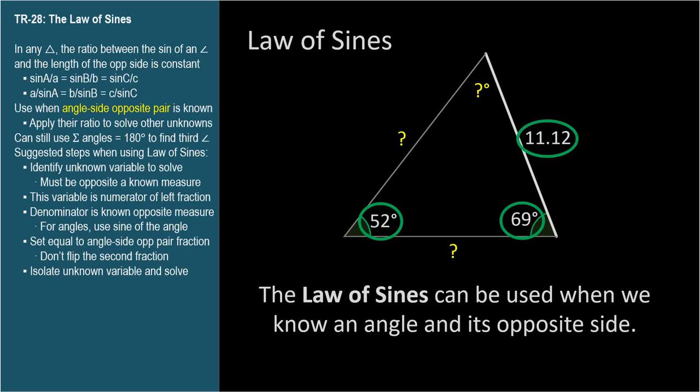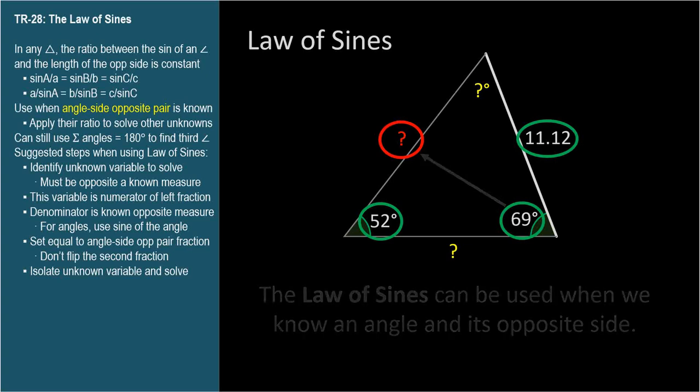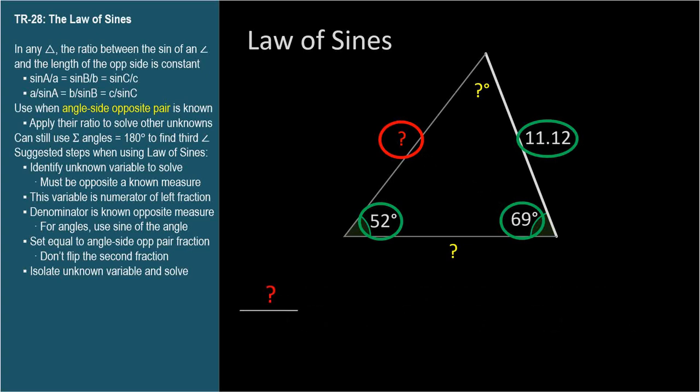Please let me suggest that you start with the unknown value as the numerator of your first fraction. It will be a side if you know the opposite angle, or an angle if you know the opposite side. In this case, we'll solve for the red question mark, so we put it in the numerator of the first fraction and the opposite angle in the denominator. When you put angles in the fraction, remember to use the sine function on them.